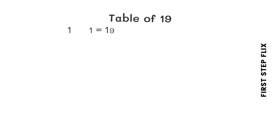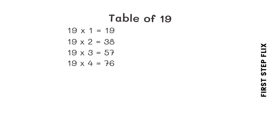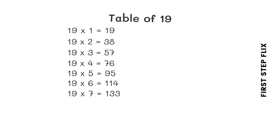19 ones are 19. 19 twos are 38. 19 threes are 57. 19 fours are 76. 19 fives are 95. 19 sixes are 114. 19 sevens are 133. 19 eights are 152.